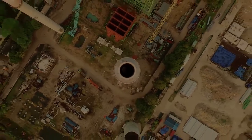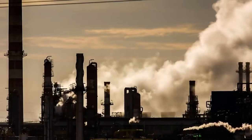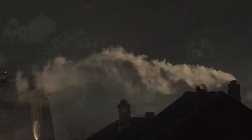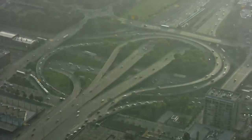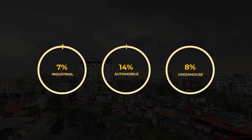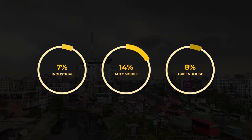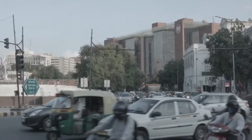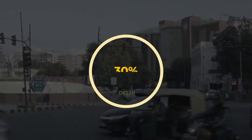This irrevocable pollution paves the way for a generation that has only known darkened skies and polluted air. We discovered that the industrial and automobile sector amount to an estimated 7% and 14% of total pollution accumulated. Around 8% of total greenhouse gases emitted in India come from the transport sector, and in Delhi alone it amounts to 30%.